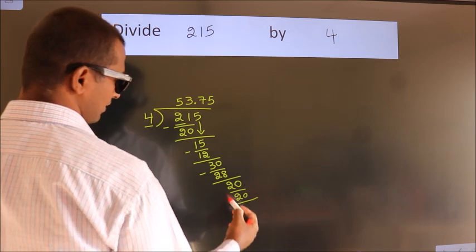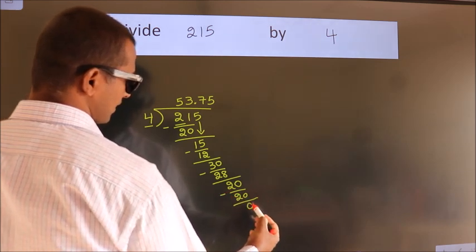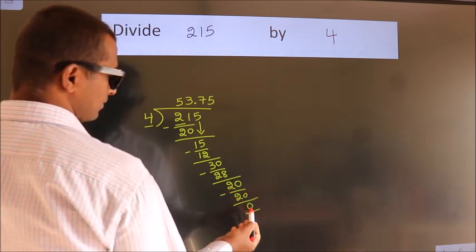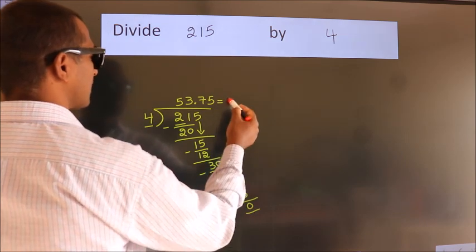Now we subtract. We get zero. We got remainder zero, so this is our quotient: 53.75. Thank you.